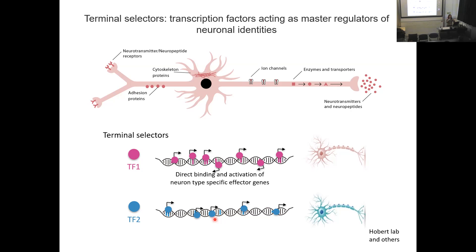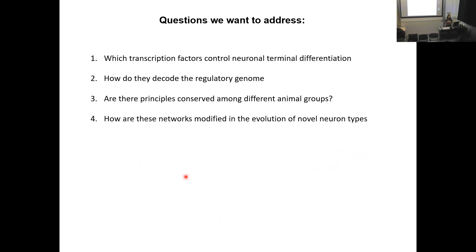In the last 10 years in my lab, we have been contributing to this model, identifying additional terminal selectors. But perhaps more importantly, what we have been focusing on is that terminal selectors don't work alone — they work in combination. We call these terminal selector collectives, and this combinatorial function is what allows decoding of the regulatory genome. The questions we address are: which decision factors control terminal differentiation, how do they decode the regulatory genome, whether those combinations are conserved in other animal groups, and how these regulatory networks are modified in evolution to generate new neural types.